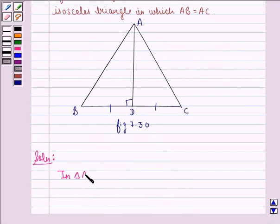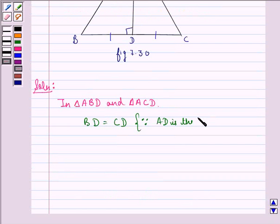In triangle ABD and triangle ACD, BD is equal to CD because AD is the perpendicular bisector of BC.